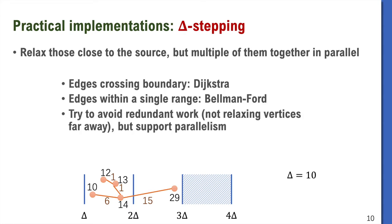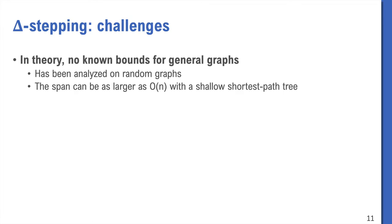This algorithm is like a hybrid of Dijkstra and Bellman-Ford. Across range, it uses Dijkstra style to reduce redundant work. Inside a range, it runs parallel Bellman-Ford in sub-steps, so it can support parallelism. In practice, delta-stepping has pretty good performance. But there are still some additional challenges. In theory, there's no known good work and span bounds for delta-stepping on general graphs. In practice, one of the questions is how to select the best parameter of delta.